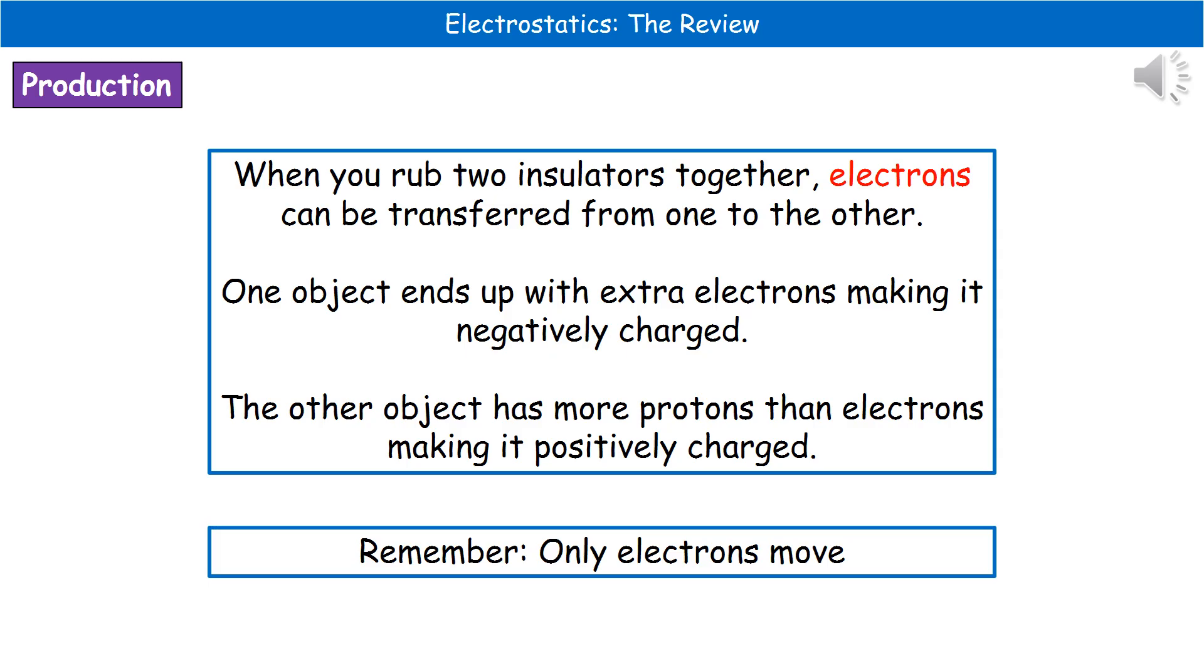If we take two insulators and rub them together, then electrons are transferred from one material to the other. We end up with one object that's got more electrons, which means it's got more negative charges than positive, so it becomes negatively charged overall. The other object that lost those electrons now has more protons than electrons, which means it becomes positively charged.